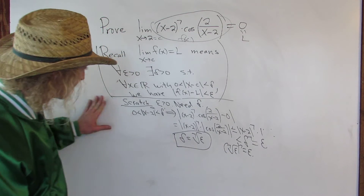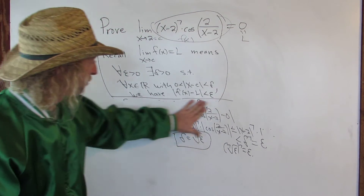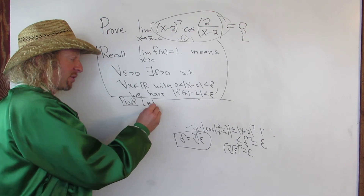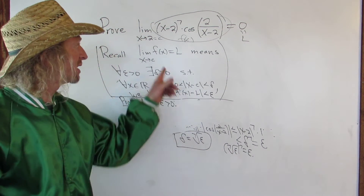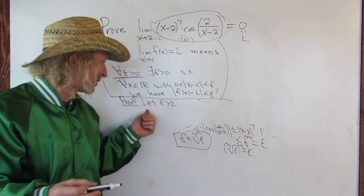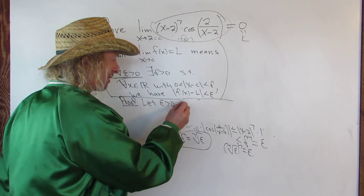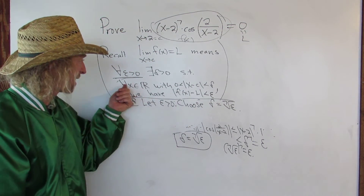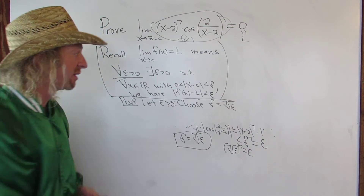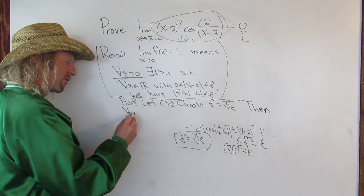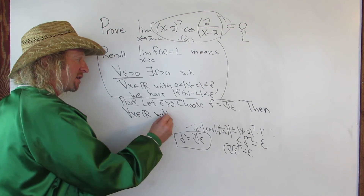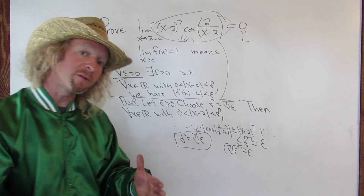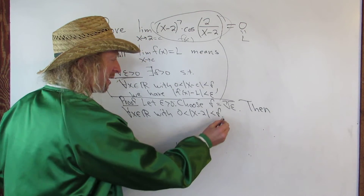Let's go ahead and write the formal proof — I'll erase the scratch work. For the formal proof, we start by saying: let epsilon be greater than 0. Then we choose our delta. Since epsilon exists, certainly the 7th root of epsilon also exists, so choose delta to be the 7th root of epsilon. Then for all x in the real numbers with the distance between x and 2 less than delta, we look at the difference between f of x and L.